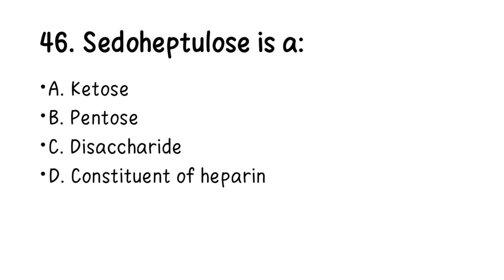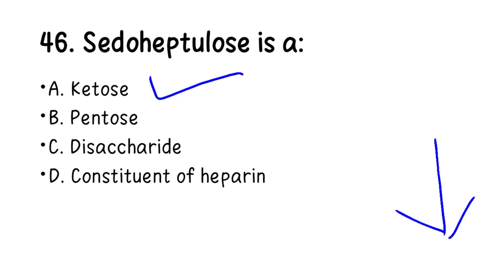Number 46. Sedoheptulose is: A. Ketose, B. Pentose, C. Disaccharide, D. Constituent of heparin. The right answer is ketose. There are different ways to classify carbohydrates — by number of carbons (triose, pentose, etc.) or by number of sugar molecules (monosaccharide, disaccharide, polysaccharide). I will make a dedicated video on that, so hit the subscribe button.